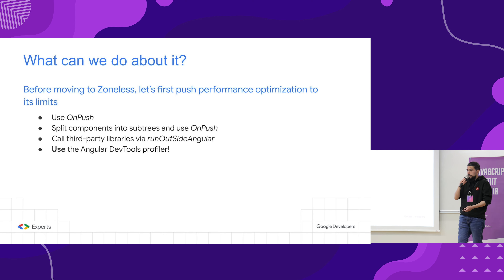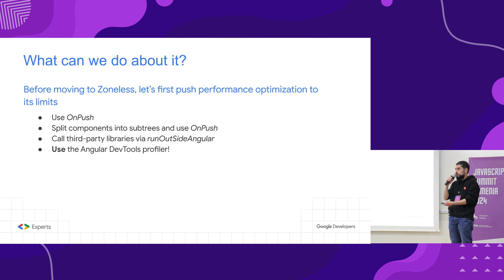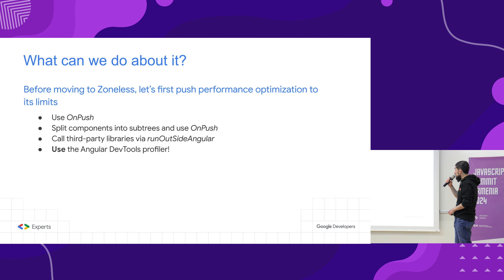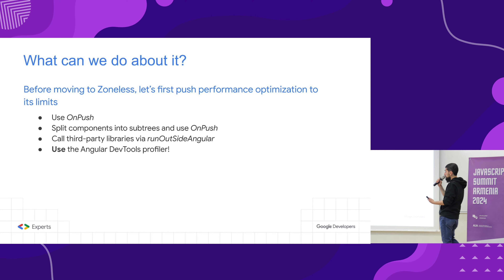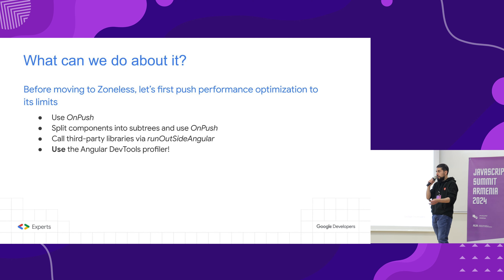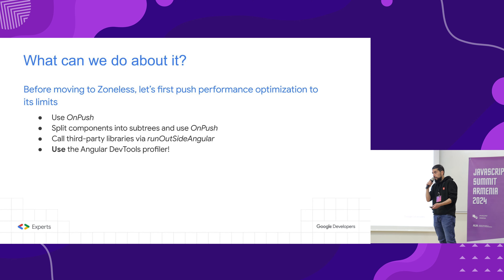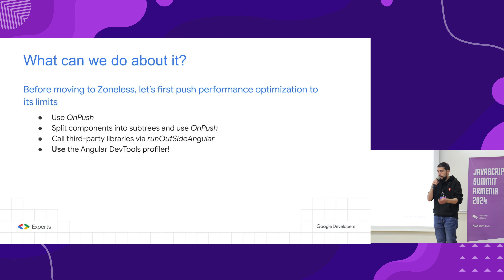Before moving to zoneless — before ditching zones — let's first answer what we can do about it. One approach is to use the OnPush change detection strategy, which is popular. Everyone who works with Angular knows that this is one way to do it. But very often people stop at just marking a component as OnPush and think that's the limit of what they can do — but that's not exactly true. With OnPush, you can split components into subtrees and use OnPush on all of those components. It's better to have five small components each marked OnPush, instead of one big component that is also marked OnPush. Putting components into subtrees and using OnPush strategy is already kind of great for performance.